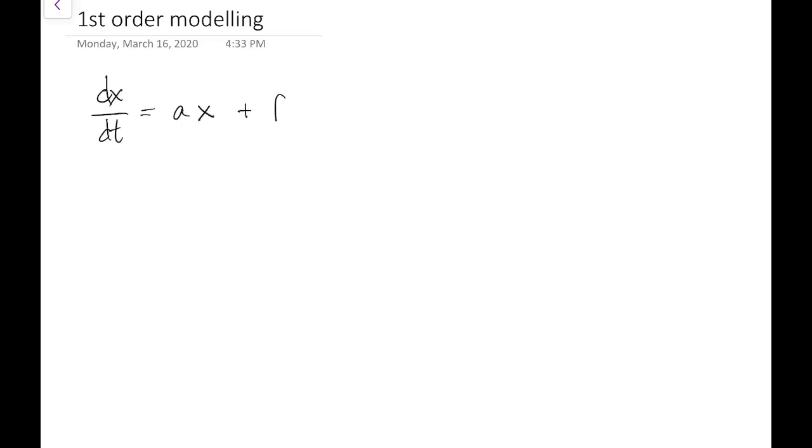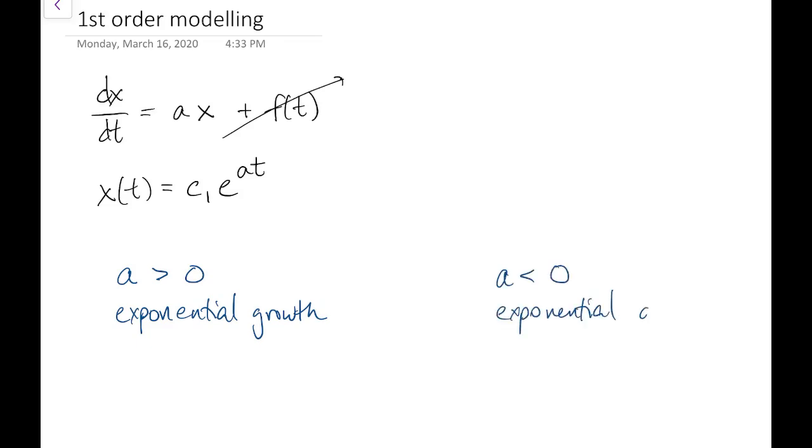We're looking at scientific and engineering phenomena that can be modeled by a first order scalar linear equation. We're not even going to consider forcing terms, so the solution is just constant times an exponential. When the coefficient is positive, that means we have exponential growth. When it's negative, that means we have exponential decay.